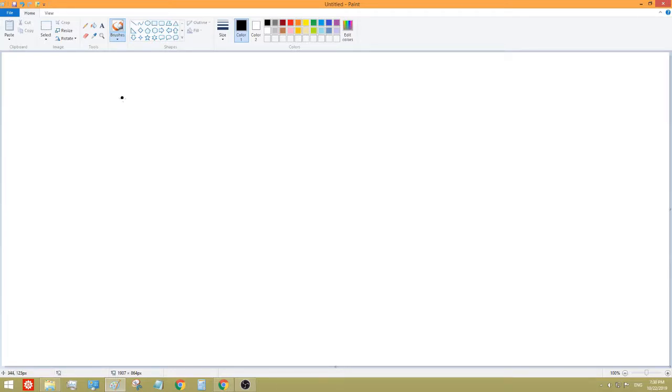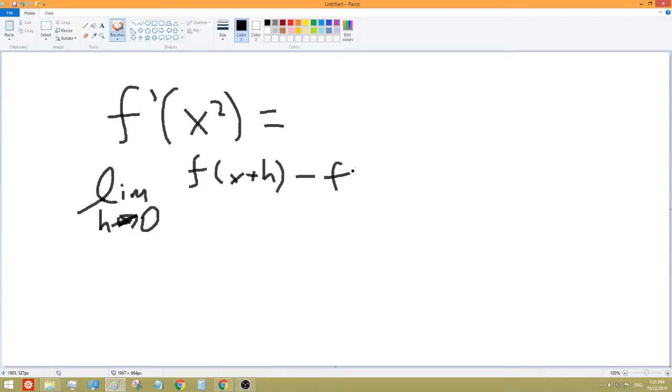So, first of all, let's do the derivative of X squared. So, we'll have F prime of X squared. So, let's do an equal sign. We're going to use the limit definition to prove for now. H goes to 0. We'll have F of X plus H minus F of X over H. So, what does this come out to? The function is X squared. Whatever's inside of here is squared. So, X plus H squared minus X squared over H.